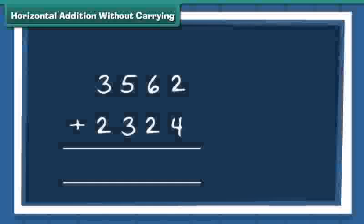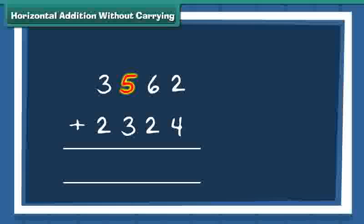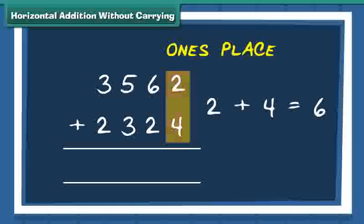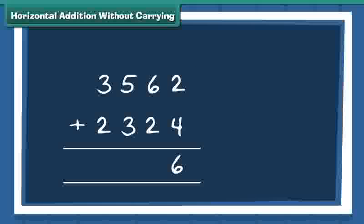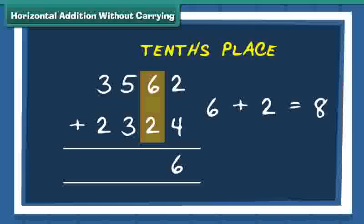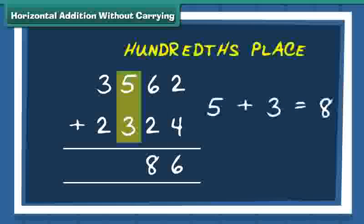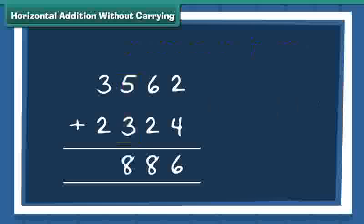We have the two numbers, 3562 and 2324. Now we first add numbers at ones place, next we move to numbers at tens place, then add the numbers at hundreds place, and finally the numbers at thousands place are added. Thus, the sum of 3562 and 2324 is 5886.